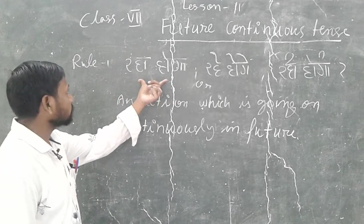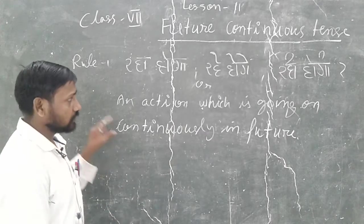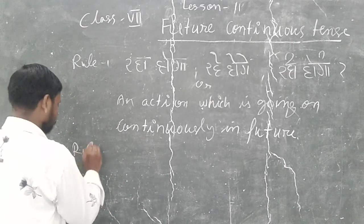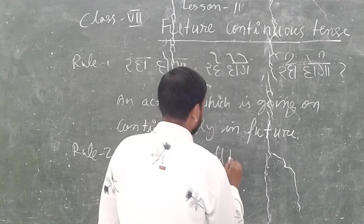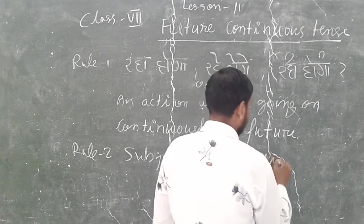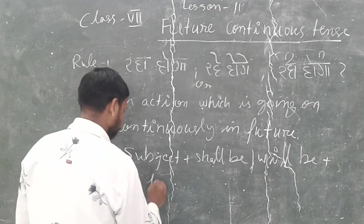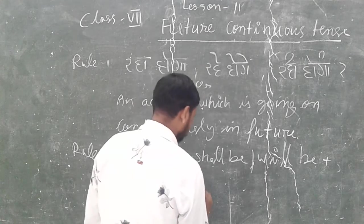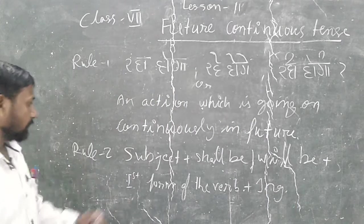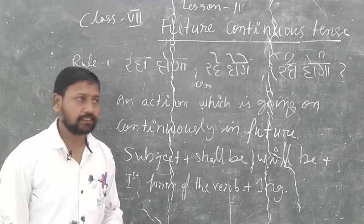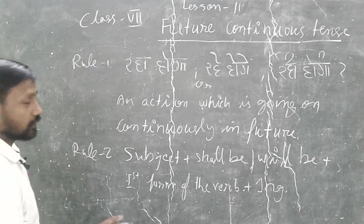Whatever I have written on the board — an action which is going on continuously in the future. Rule second: Subject + shall be / will be + first form of the verb + ing. So the structure is: subject, shall be or will be, plus first form of the verb plus ing. That is the second rule of future continuous tense. I hope you have taken a screenshot or written it down.